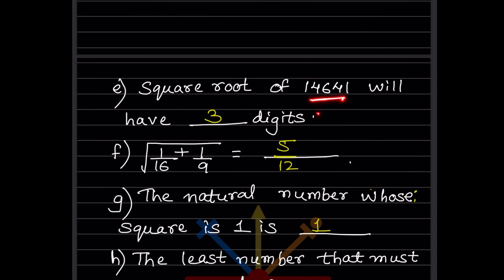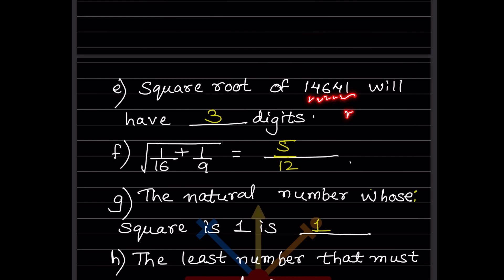The square root of 14641 will have three digits. This is because 14641 has an odd number of digits — five digits — so the number of digits in its square root is (5+1)/2 = 3.